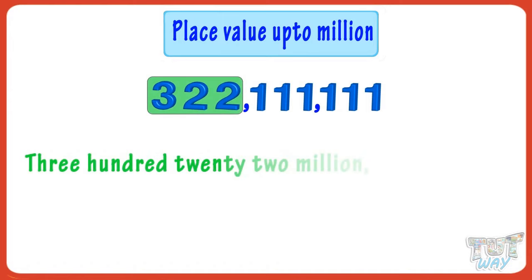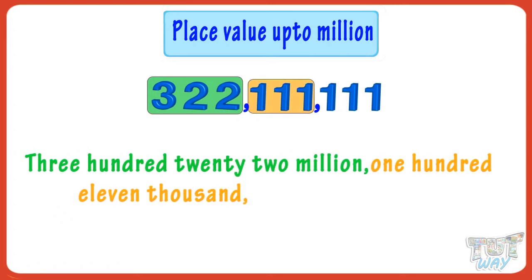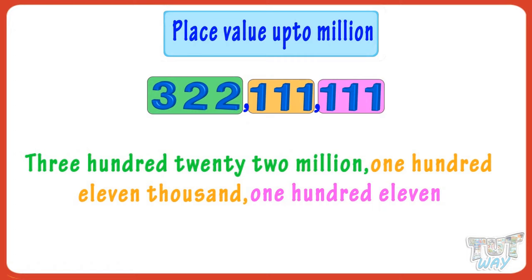Now take another example. Starting from the left, put commas after every three numbers. Here we have two commas. We will read it as three hundred twenty-two million, one hundred eleven thousand, and one hundred eleven. So the number is three hundred twenty-two million one hundred eleven thousand and one hundred eleven.